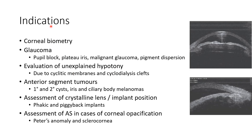Coming to the indications of ultrasound biomicroscopy: it can be used in corneal biometry. It can be used in glaucoma patients to visualize pupil block, plateau iris, malignant glaucoma, and pigment dispersion. This picture shows ultrasound biomicroscopy of a case of phacomorphic glaucoma.